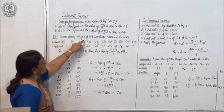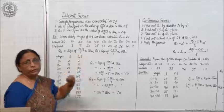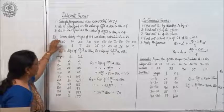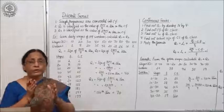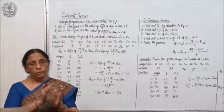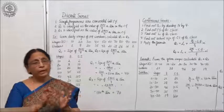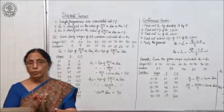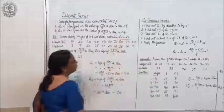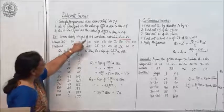The example gives daily wages of 199 workers; calculate Q1 and Q3. Q1 is the lower quartile — the series is divided into four equal parts, and the one on the lower side is Q1. The upper quartile is Q3, and the middle one is Q2, which is the median. So you have to find out Q1 and Q3 from this data.